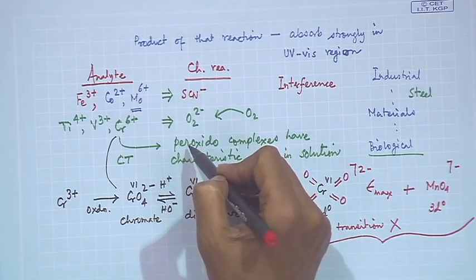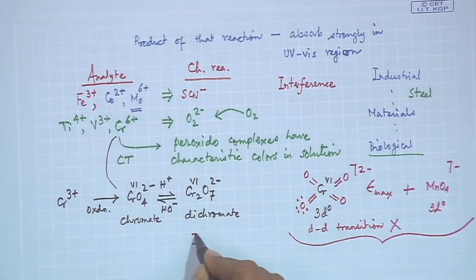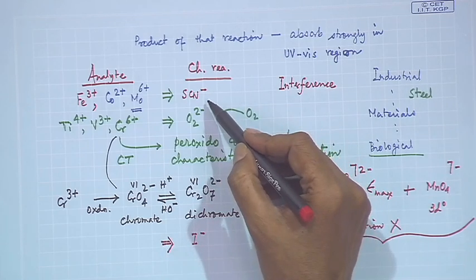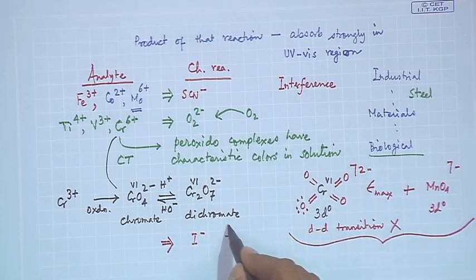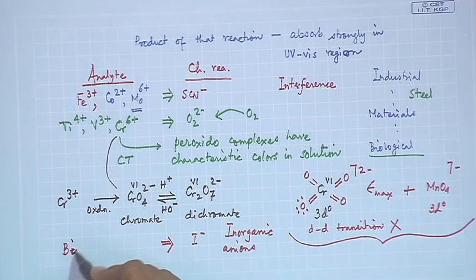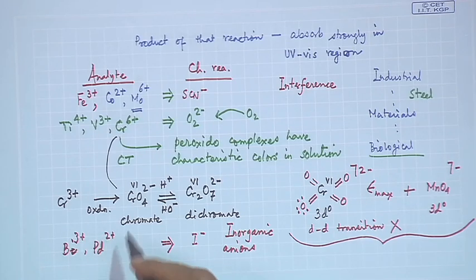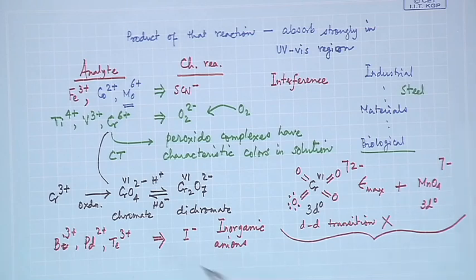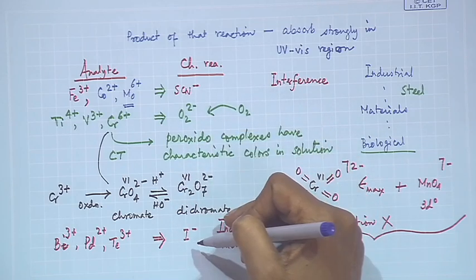Inorganic anions — thiocyanate, peroxide, and iodide — are all useful chromophoric reagents for detecting metal ions. Iodide ion can react with bismuth Bi3+, palladium Pd2+, and tellurium Te3+ in aqueous solution, giving very good coloration. Aluminum Al3+ can be detected using alizarin.